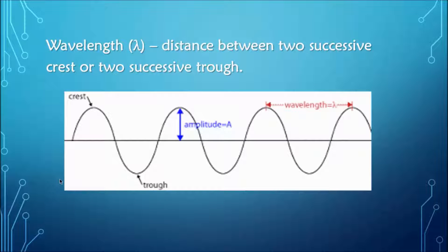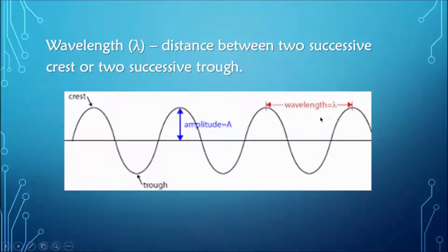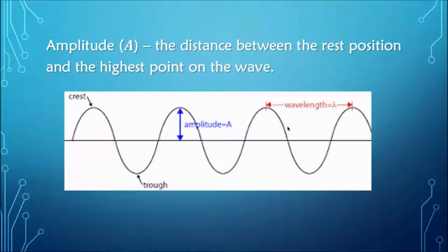Wavelength is defined as the distance between two successive crests or two successive troughs. On our diagram, we have the troughs and crests labeled. One wavelength in the case of a crest goes from one crest to the next, and for the trough, from one trough to the next. So the wavelength is simply the distance between two successive crests or two successive troughs.